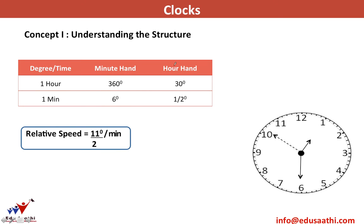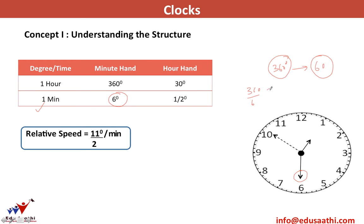The minute hand moves 360 degrees in 60 minutes because every hour the minute hand completes one full round. So in 1 minute the minute hand moves 360 ÷ 60 = 6 degrees per minute, and in 1 hour it moves 360 degrees. Similarly, the hour hand completes 360 degrees in 12 hours.